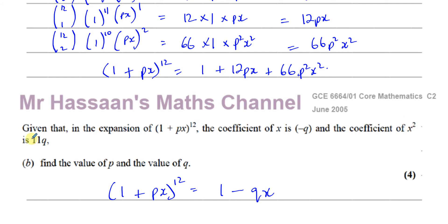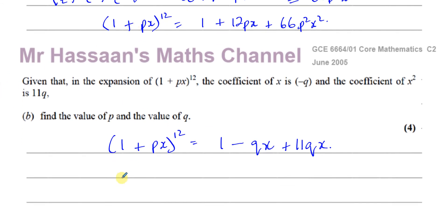And the coefficient of X squared is plus 11Q. So plus 11Qx squared. That's what they're saying it's going to become. Now we already expanded this in terms of P.